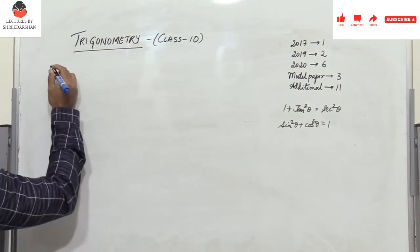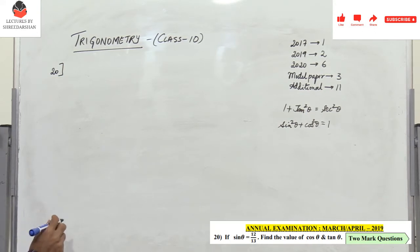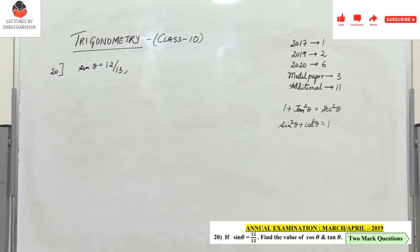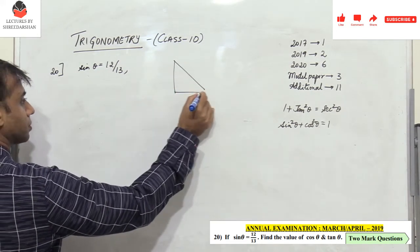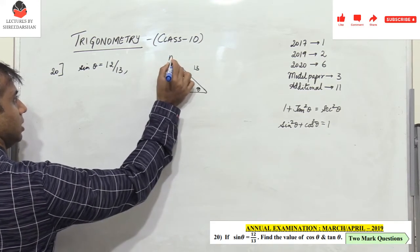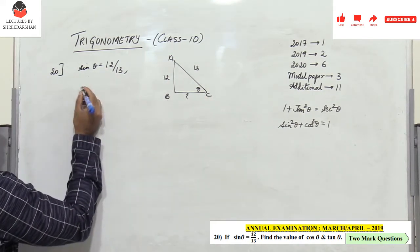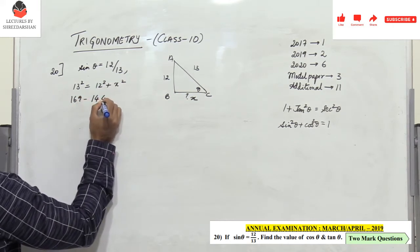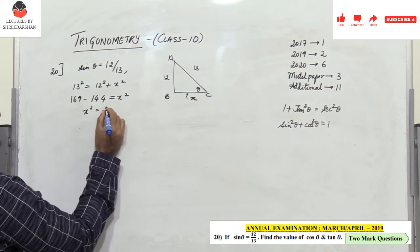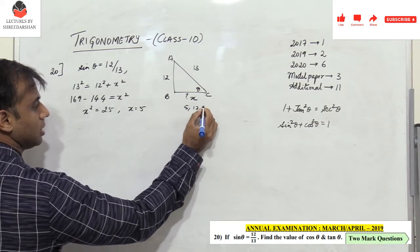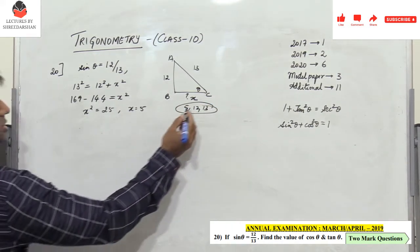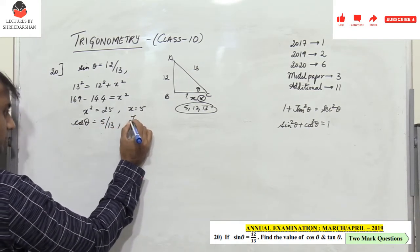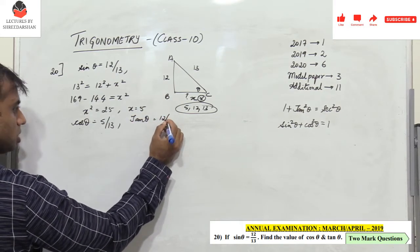Problem 20 is from April 2019 — a two-mark problem. Given sinθ = 12/13, find cosθ and tanθ. Using Pythagoras: 13² = 12² + x², so 169 − 144 = x², giving x² = 25, x = 5. Note that 5, 12, 13 are Pythagorean triplets. Therefore cosθ = adjacent/hypotenuse = 5/13, and tanθ = opposite/adjacent = 12/5.